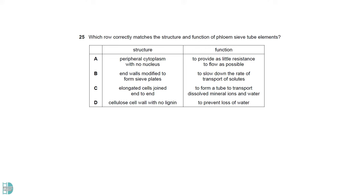A is the answer, as the sieve tube element has peripheral cytoplasm and little organelles to allow more movement of cell sap in it. B is wrong, as slowing down the movement would not help with the function of phloem. The function stated in C is for xylem, not phloem. D is wrong because lignin is supposed to prevent water loss. Also, preventing water loss is not something we need to achieve here.